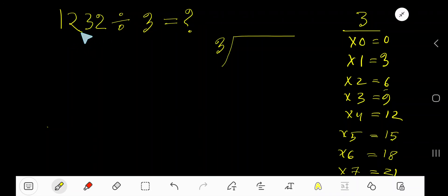How to divide 1,232 divided by 3. 3 is a divisor and 1,232 is a dividend.